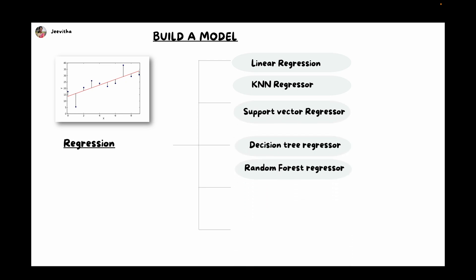The next important thing is to build a model. You have to choose which model suits your data. We have two types of machine learning algorithms: supervised and unsupervised. Under supervised, we have regression and classification. Go with regression if the data type of the target variable is continuous. Regression algorithms include linear regression, KNN, support vector, decision tree regressor, random forest, gradient boosting, and XGBoost regressor. Examples: house price prediction, sales prediction, flight price prediction, loan price prediction.